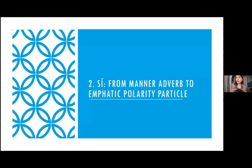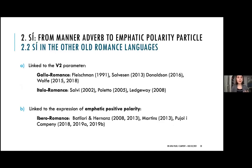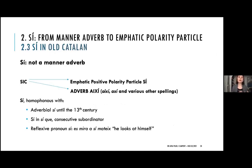How do we get this C related to polarity in Catalan? In Latin, we have the manner adverb SIC used in answers to yes/no questions in an emphatic way, as in example 29. This manner adverb SIC surfaces in different ways in the medieval Romance languages: in Gallo-Romance and Italo-Romance varieties it has been linked to the fulfilment of the V2 parameter; in Ibero-Romance it has mainly been linked to the expression of emphatic positive polarity. SIC also yields a manner adverb and a consecutive subordinator that is homophonous with the expression we're talking about today.